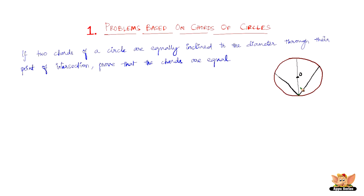These two chords are also equally inclined to the diameter, so these angles are equal. We need to prove that if this is the case, then the chords are equal. Let us name the points A, B, C, and D.